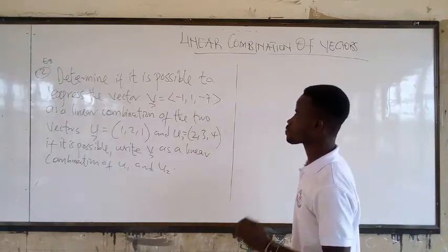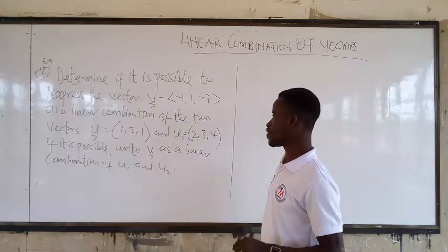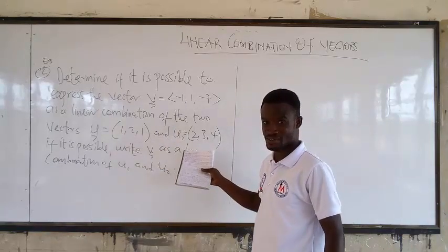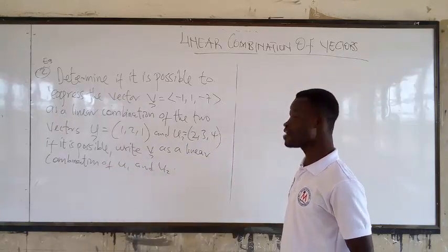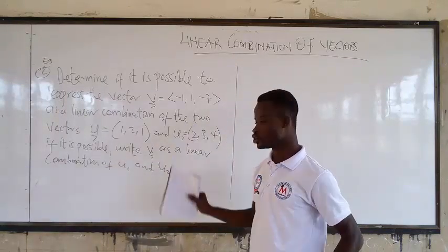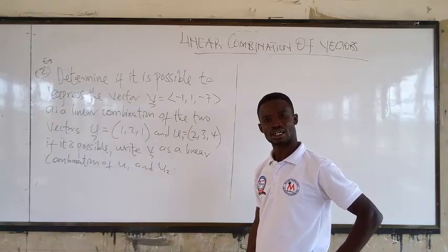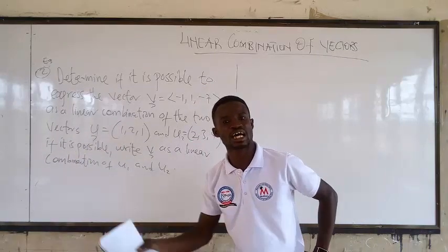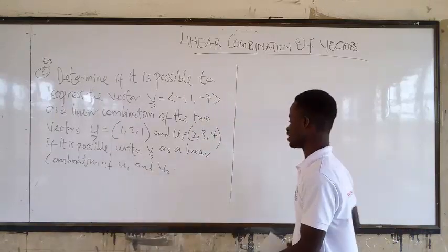Determining if it is possible to express the vector as a linear combination of two vectors. And these are the two vectors. So the second question, the first question was three vectors here. That's U1, U2, and U3. If it is possible, write B as a linear combination of U1 and U2. But when do we say it's not possible? That is when the scalar multiple is zero. Because if the scalar multiples are zero, you will see that you are not going to get anything. So it will not be possible.